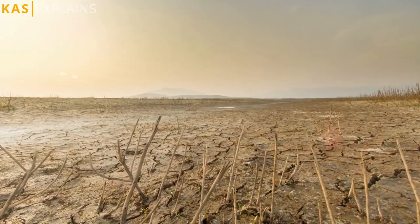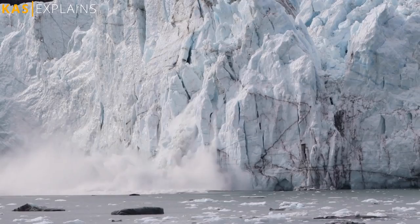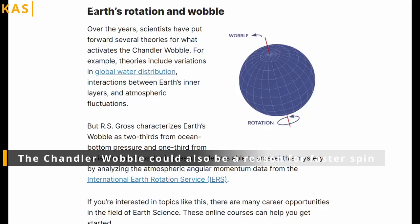Some opine that climate crisis is responsible for the recent acceleration. Loss of weight at poles due to melting glaciers would shift the mass closer to the center of the Earth, hence increasing its rotational speed.